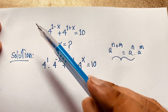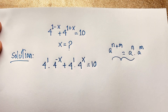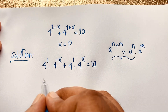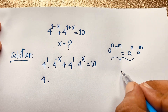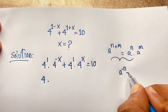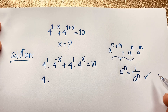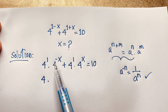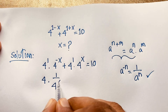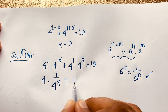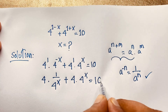I apply this formula here and here. Now, 4 to the power 1 is 4. Another rule is that a to the power negative n equals 1 over a to the power n. Applying this formula here, it becomes 4 times (1 over 4 to the power x) plus 4 times 4 to the power x, is equal to 10.